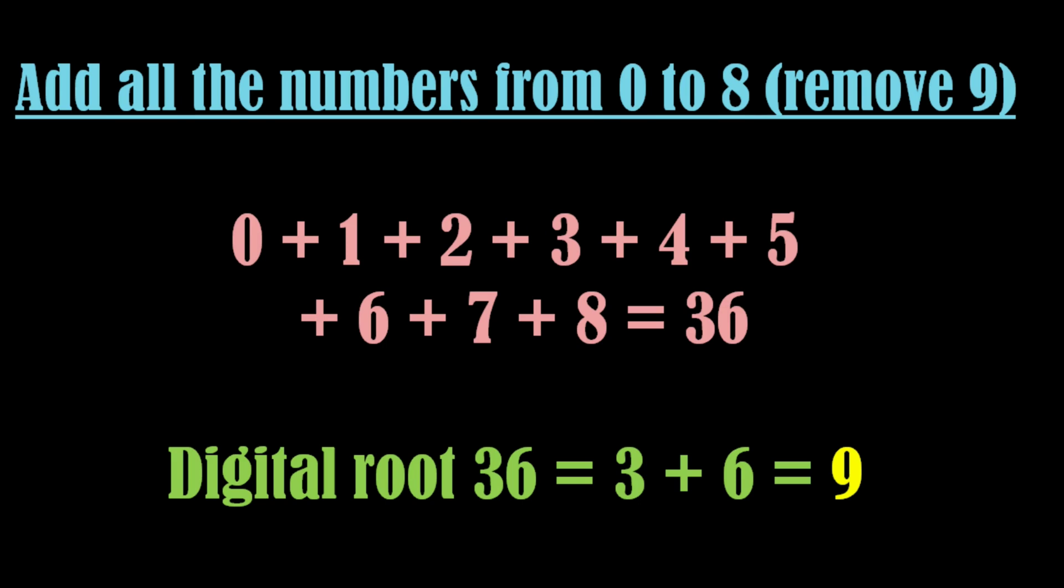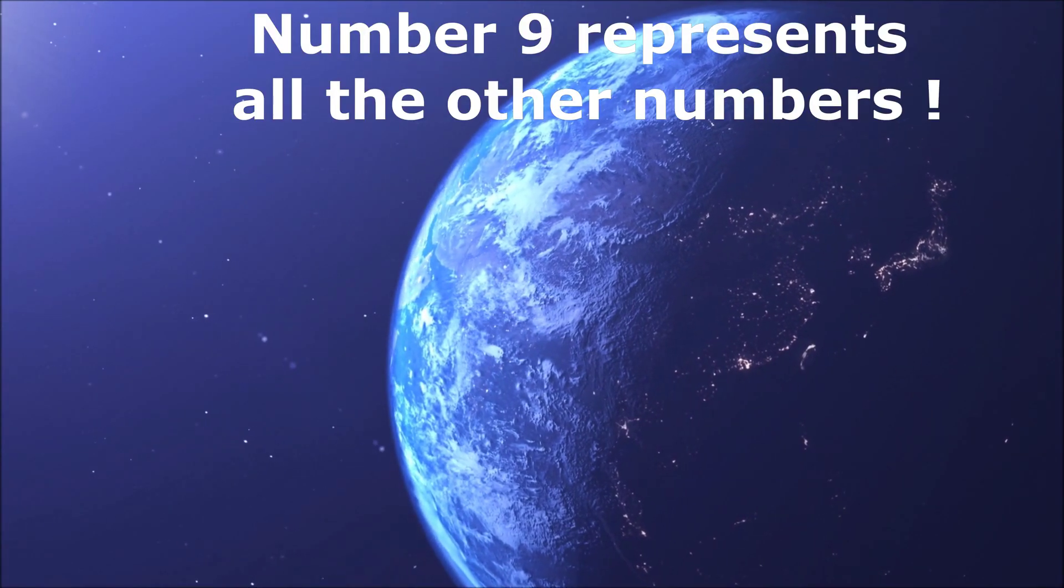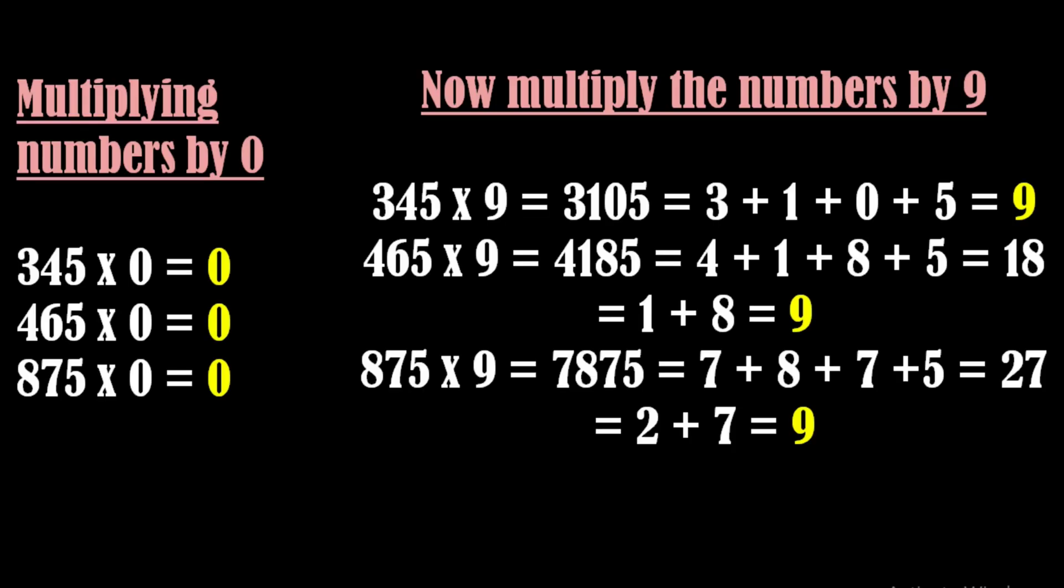Now let's explore a mysterious fact about 9. If we add up all the numbers from 1 to 8, excluding 9, the resulting sum reduces to 9. Consequently, we can conclude that number 9 represents all the other numbers. Not just this, as we get 0 on multiplying any number by 0, in the same way, we get 9 as the digital root on multiplying it with 9. Observe these calculations.